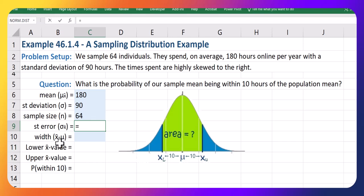The only difference here is we need to get the standard error because it's a sampling distribution. So take your standard deviation and divide by the square root of your sample size. Let's see what that gives us. So 11.25 is the standard error.